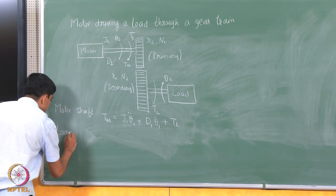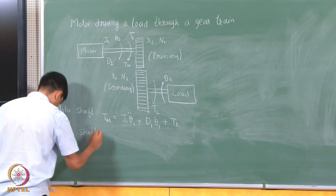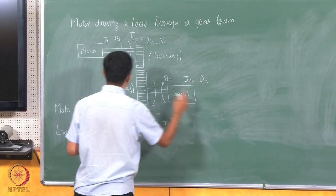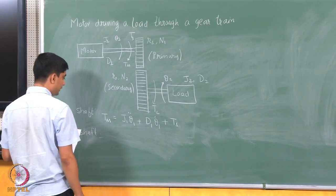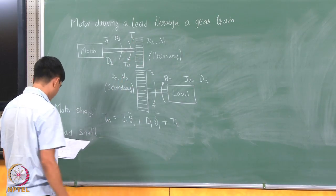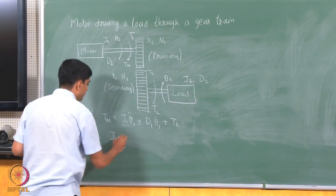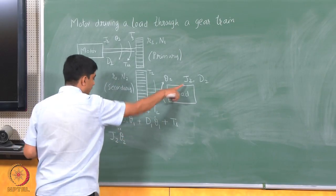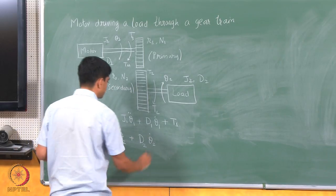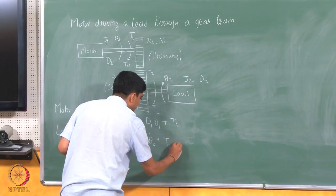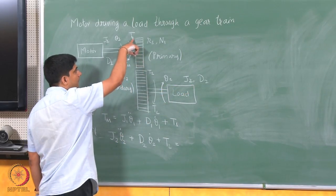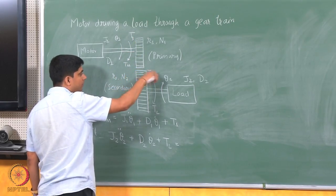At the load side, I have J2 and D2. The torque T1 transmitted through the gear train appears as T2 on the load side. The load-side equation is: T2 equals J2 theta2 double dot plus D2 theta2 dot plus T_L. So Tm compensates for J1, D1, and T1, which in turn must cover J2, D2, and T_L via the gear.